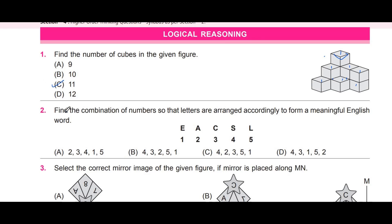The second question: find the combination of numbers so that the letters are arranged to form a meaningful English word. The letters given are E, A, C, S, L — numbered 1 through 5. We need to find which combination of those numbered letters forms a valid English word.